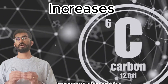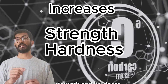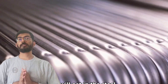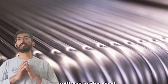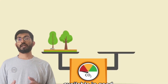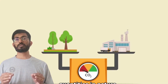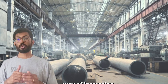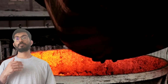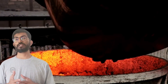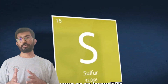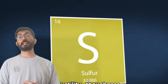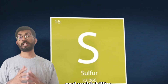Carbon is the most important element — it increases the strength and hardness of steel. Carbon is also available in huge quantities in nature, making it the cheapest way to increase the strength of steel. The more carbon you add, the more tensile strength you get out of steel.